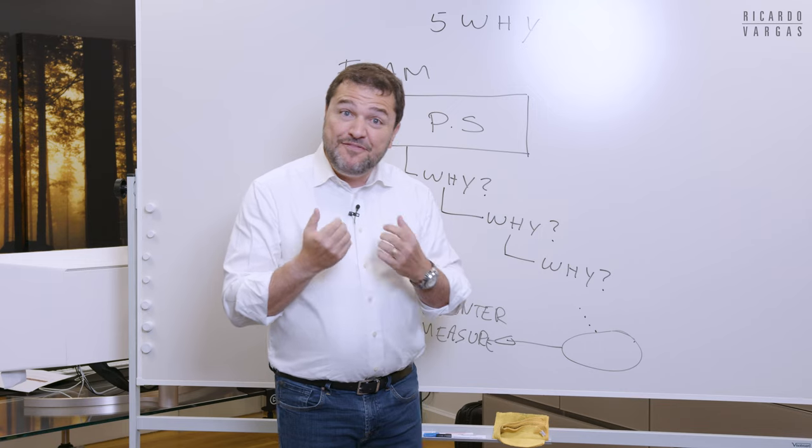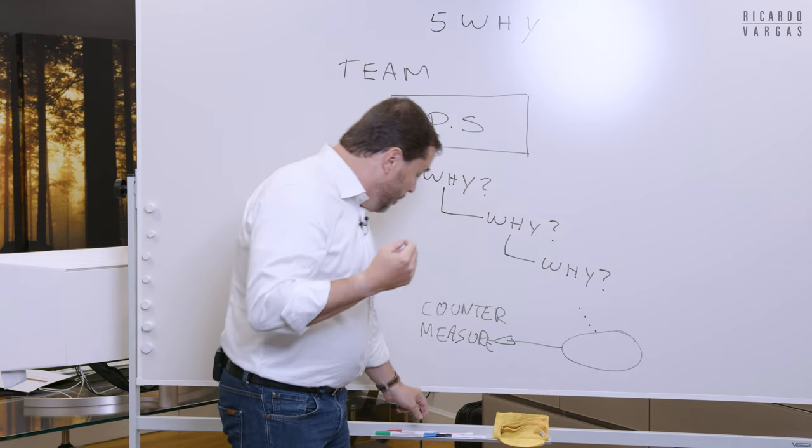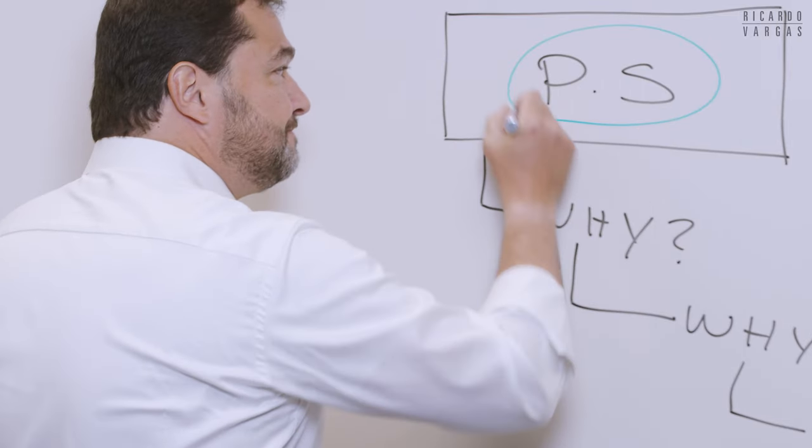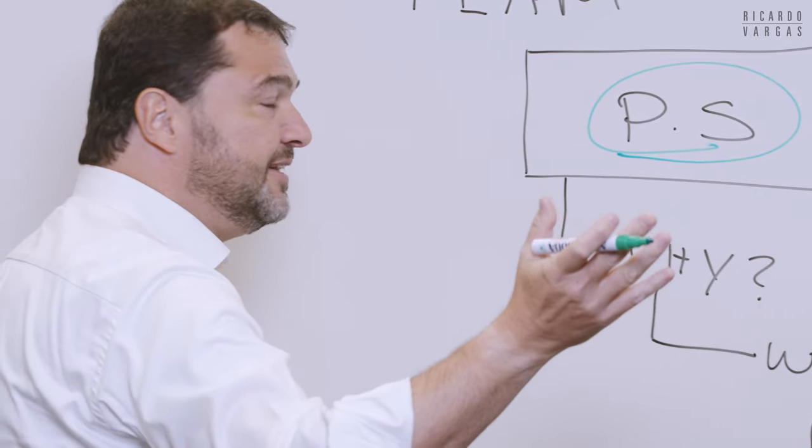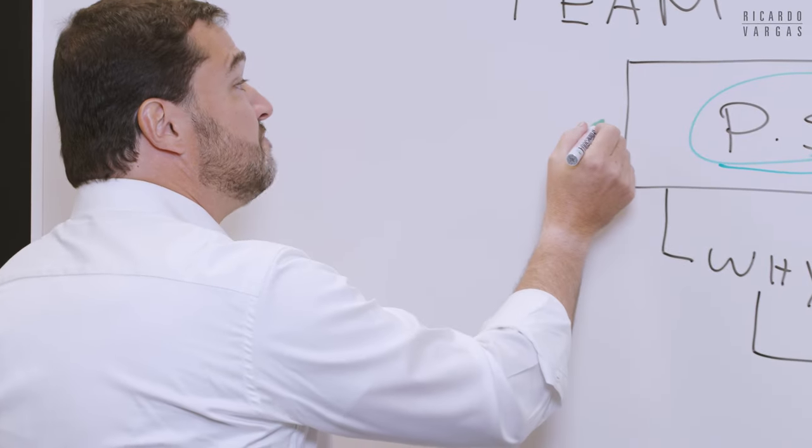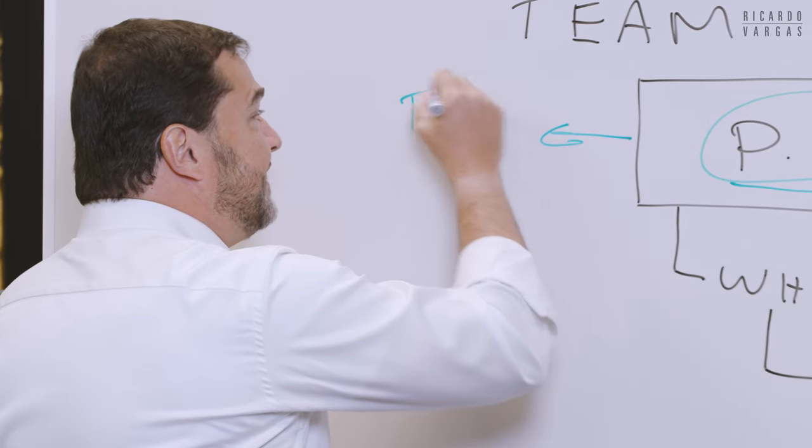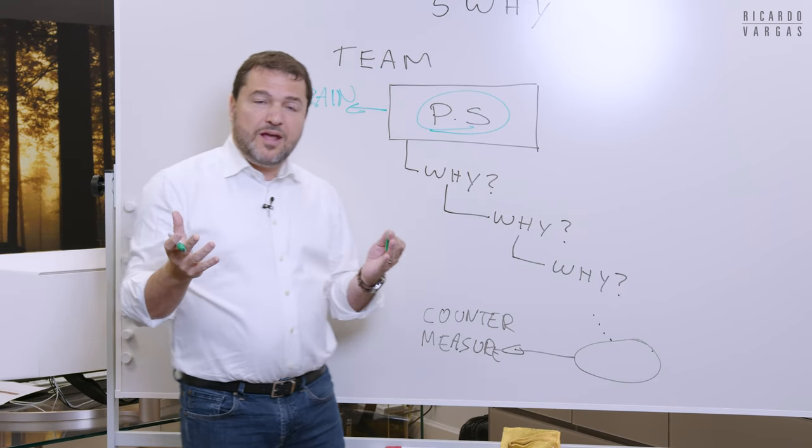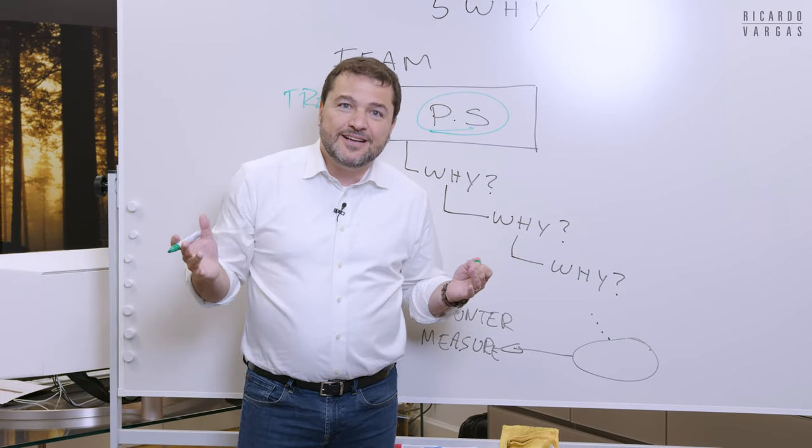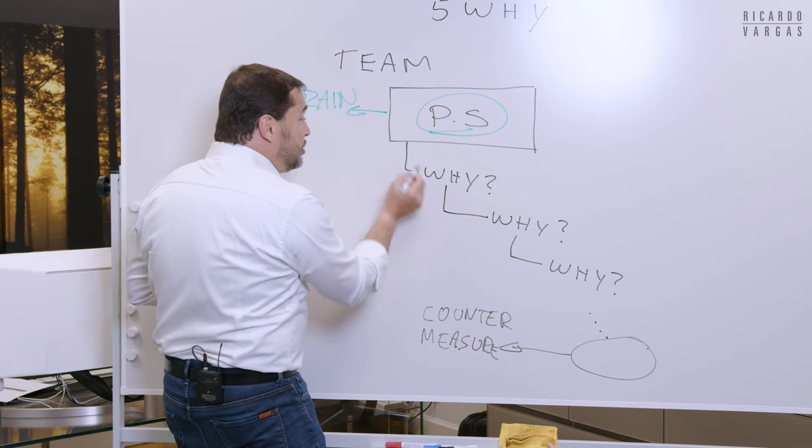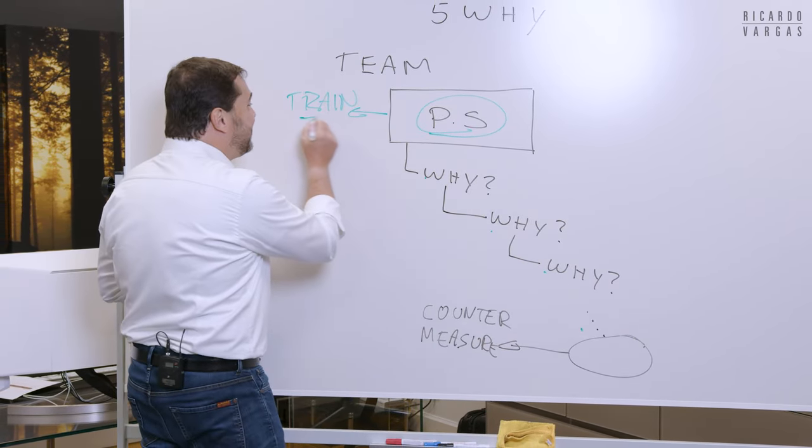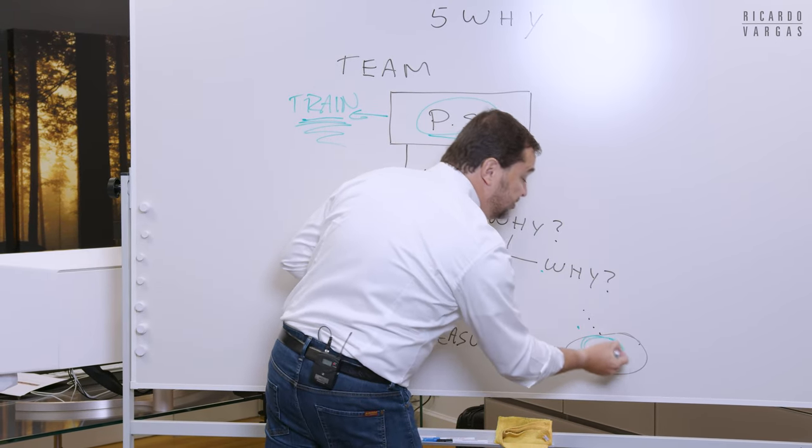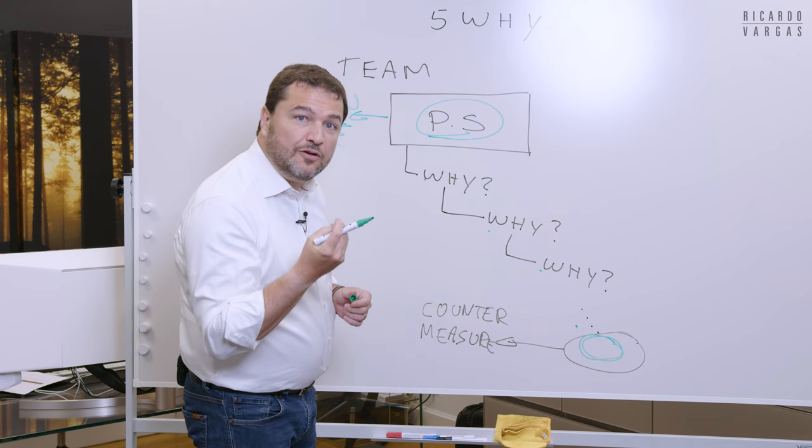And this is something very simple. Most of the time, what do we want? We want to speed up the process and we have the problem and say, people are not filling the risk register. And then you say, we need to train them. And then people say, no, it's not a matter of training. Because what happened? Because you didn't ask these whys. You were taking a countermeasure that does not address the root cause of your problem.